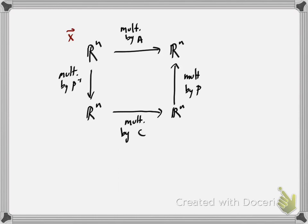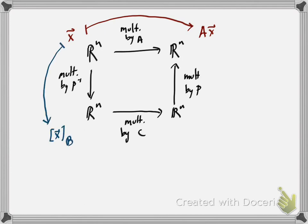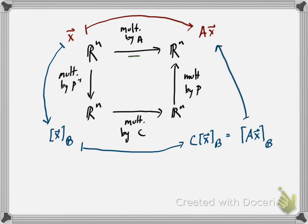There's a map going down given by multiplication by P inverse, a map going up given by multiplication by P, and the map across is multiplication by C. Multiplying X by P inverse gives the B coordinate vector of X. Taking that B coordinate vector and multiplying by C gives the B coordinate vector of AX. Multiplication by P then sends that to AX. So the B matrix for the transformation T (multiplication by A) is exactly the matrix C, and we compute it as P inverse A P.